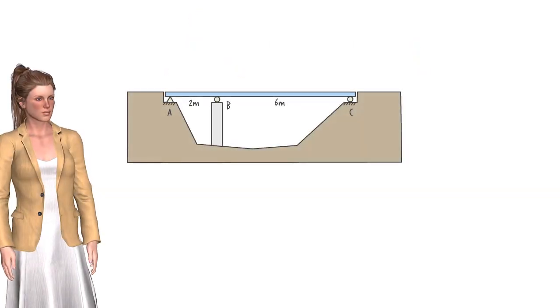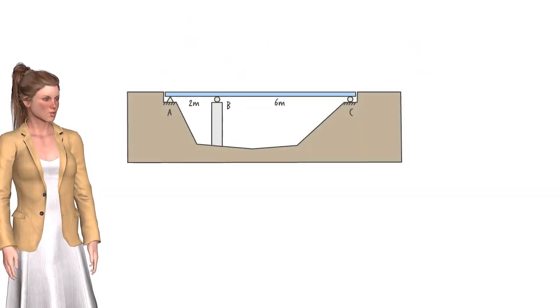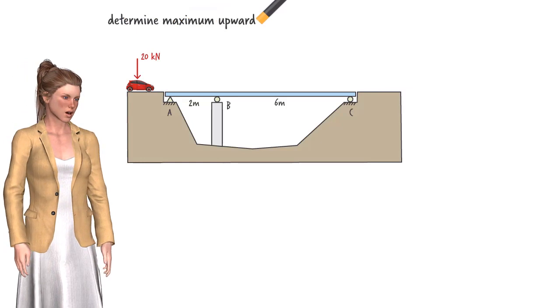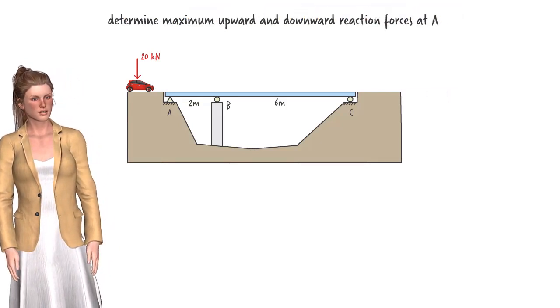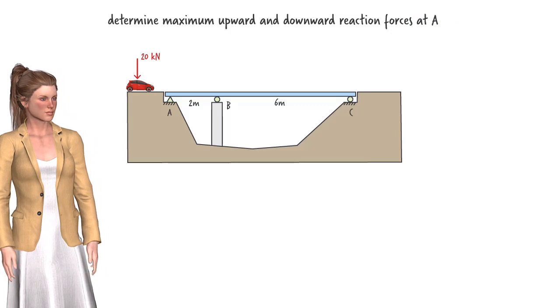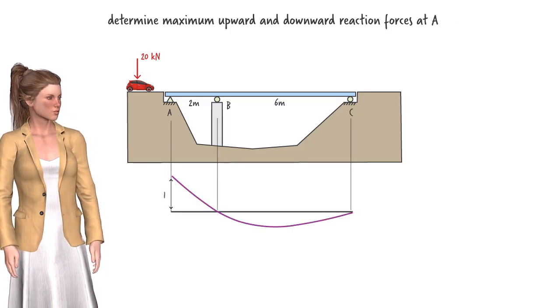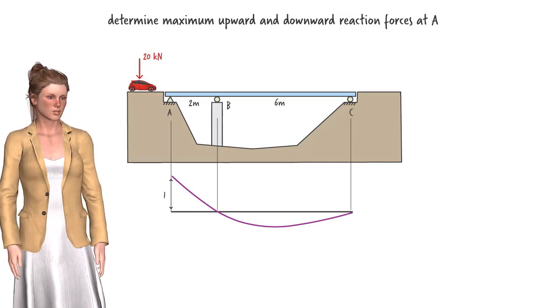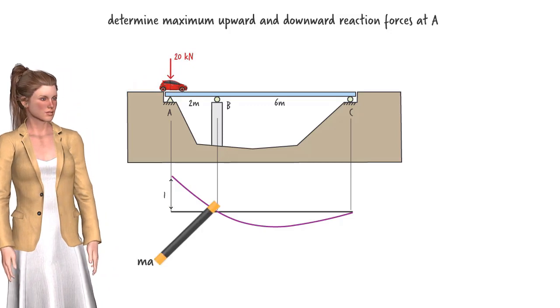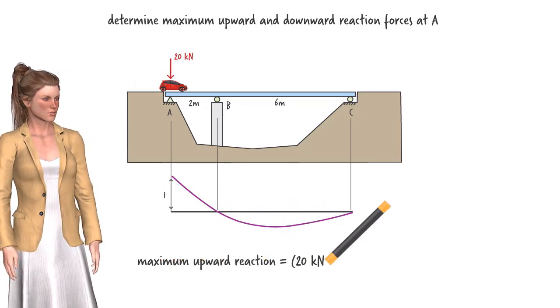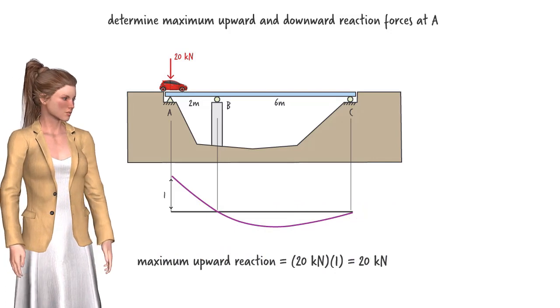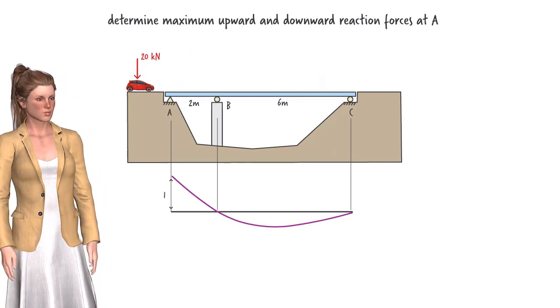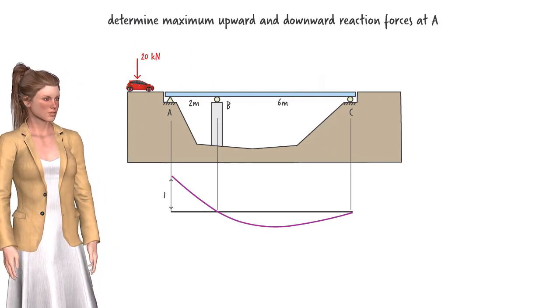Suppose our beam is a part of a bridge that needs to carry a maximum vehicular load of 20 kN. We wish to determine the maximum upward and downward reaction forces that could develop at A. Having the influence line for the reaction force, we can see that the maximum upward reaction at A occurs when the concentrated load is at A. Then, the maximum upward reaction force due to the vehicular load is 20 kN.